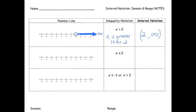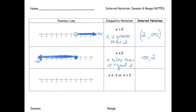In our next example, we have x is less than or equal to 2. So we fill in the circle on 2 and go to the left for all the numbers less than it. Now let's write our interval notation. The smallest number would be negative infinity — we're going towards the negative end of the number line. So we write negative infinity up to 2, which we include, so we use a bracket. We put a parenthesis on negative infinity since there really isn't an end to it.